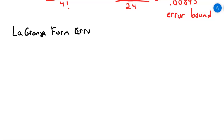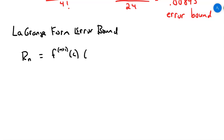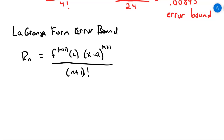The Lagrange form of an error bound looked like this. The remainder that we got by stopping at a certain number of terms — say we stopped at four terms in a Taylor polynomial — then we would look at the fifth derivative. So the n plus first derivative evaluated at some c, times x minus the center of the series to the n plus first power, all over n plus one factorial. It was this thing at the beginning that was kind of goofy.